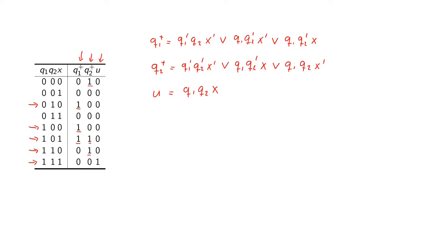Looking at our truth table, if we want to minimize in a trivial way, we can see that in this row both Q1-plus and Q2-plus have a one. This means the expression Q1 · Q2-prime · X appears in both functions, so we can reuse the gates for that expression.